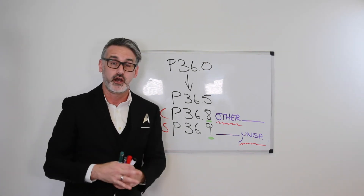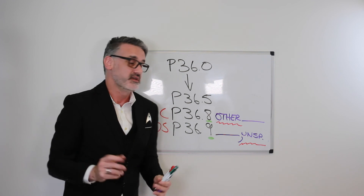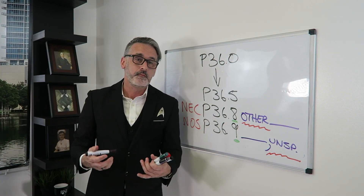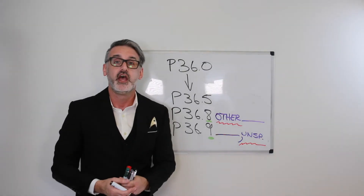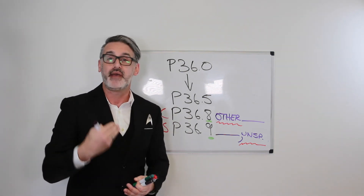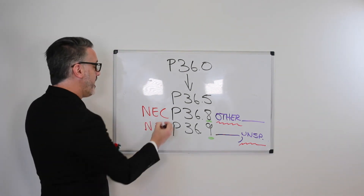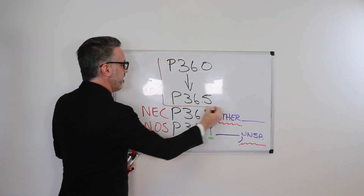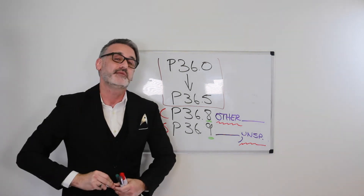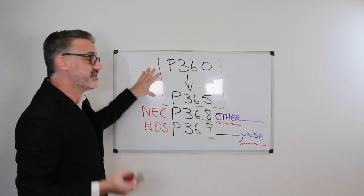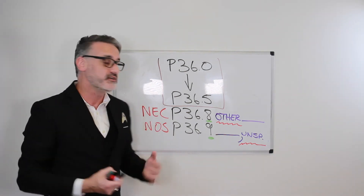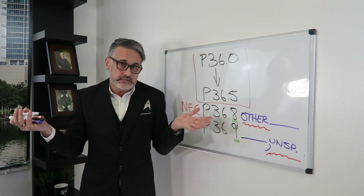So what do they actually mean? With NEC codes — not elsewhere classified, or think of it as 'none of the above' — you have great documentation. Your provider is very specific, so you know exactly what kind of bacterial sepsis of the newborn the patient has. But none of the codes listed above — P36.0 through P36.5 — fit, so you go to P36.8, 'other bacterial sepsis of the newborn.' NEC means awesome documentation but poor code selection options.